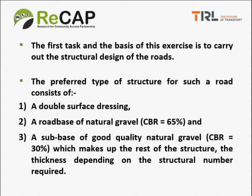Returning to exercise one: the first task is to carry out the structural design of both roads. The preferred structural type consists of a double surface dressing, a road base of natural gravel typically with a CBR of around 65%, and a sub-base of relatively good quality natural gravel with a CBR of somewhere around 30%. We can make up the rest of the structure with the sub-base, assuming the rest of the road is satisfactory. We will first use the AASHTO method.